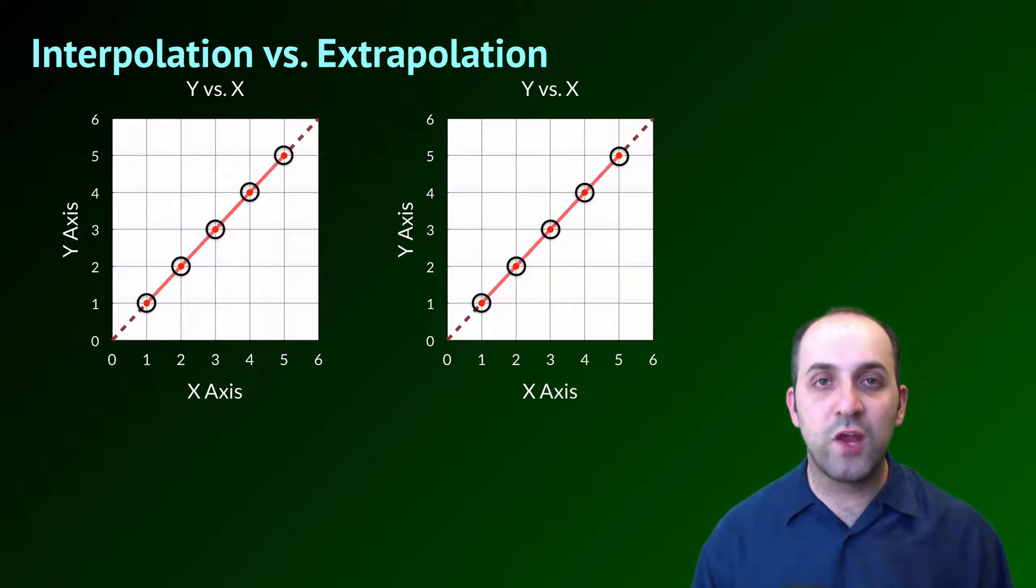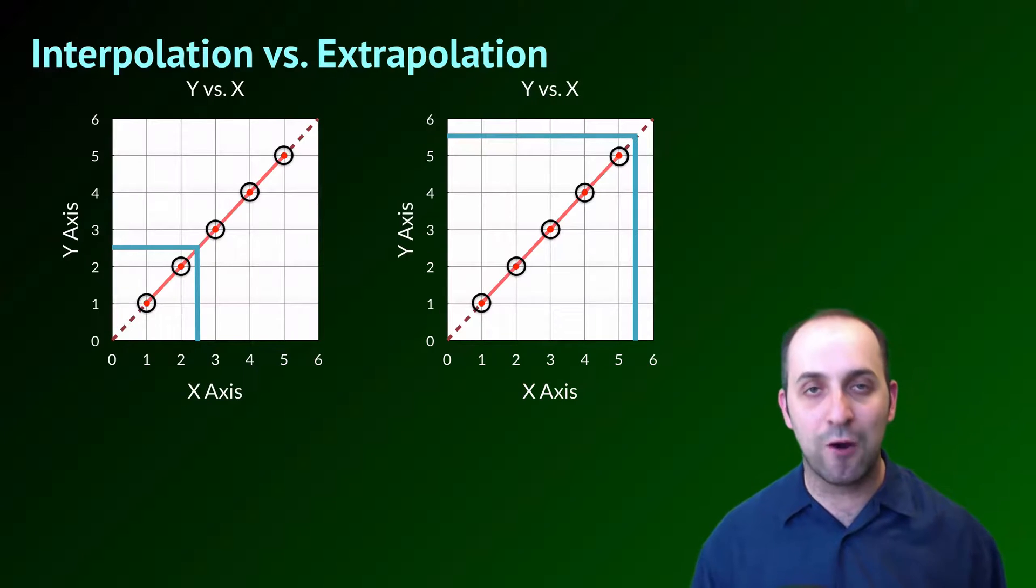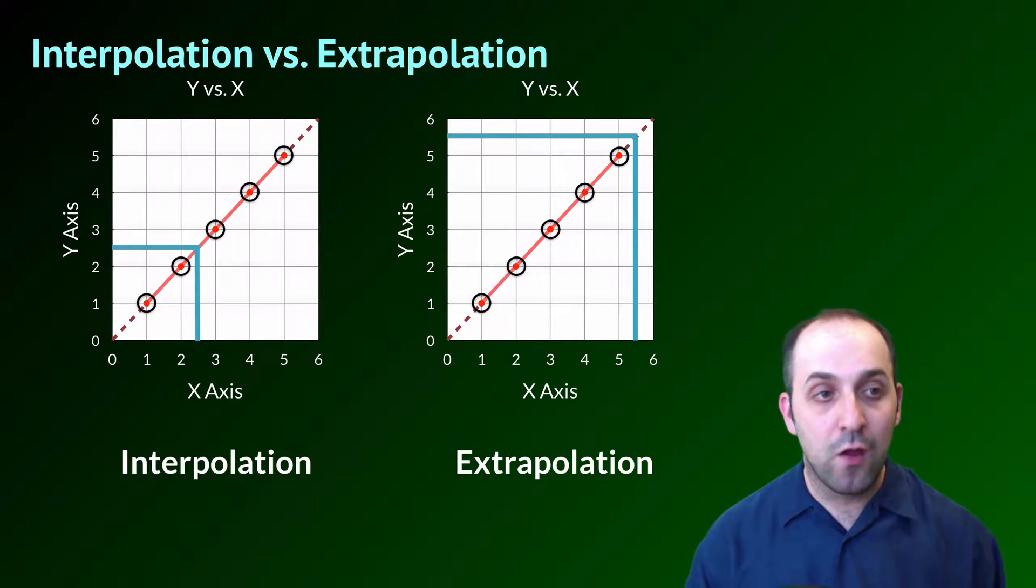Another thing that we should be aware of is the relationship between interpolation and extrapolation. Here are two of the same graph. On the graph on the left, what we're going to be looking at is we're going to be reading information from in between our points. The graph on the right, we're going to extend the trend outside of our points and get information from that. I'd like you to take a moment and jot down which one you think is interpolation and which one you think is extrapolation, and then we'll get the big reveal. So when we read data from in between our points, that is interpolation. When we read data from outside of our data points by extending the trend line, that is extrapolation.